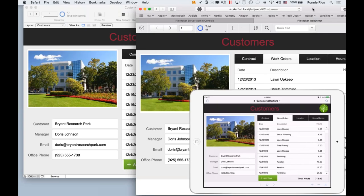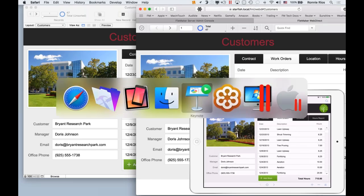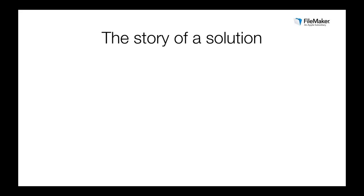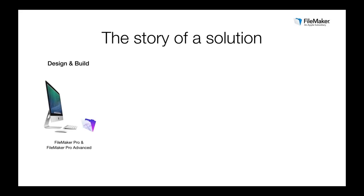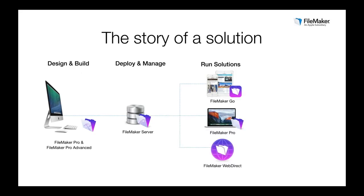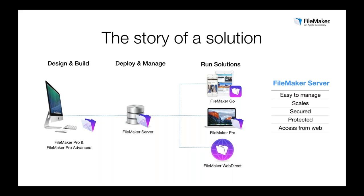This ensures that everybody on my team has the latest version of the app, no matter what device they're using or how they're accessing the information. Now with FileMaker Server, I'm still designing and building solutions using FileMaker Pro from my desktop, but I'm deploying and managing them using FileMaker Server — which allows running on mobile devices via FileMaker Go, on Mac and Windows via FileMaker Pro, and now also from web browsers using FileMaker WebDirect. The information is securely stored and protected both at rest and in transit.